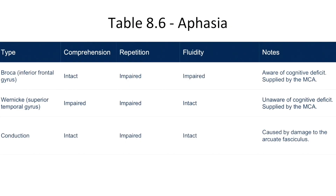This is Table 8.6, which provides the important information about each type of aphasia. It is a good summary of what we've just covered.